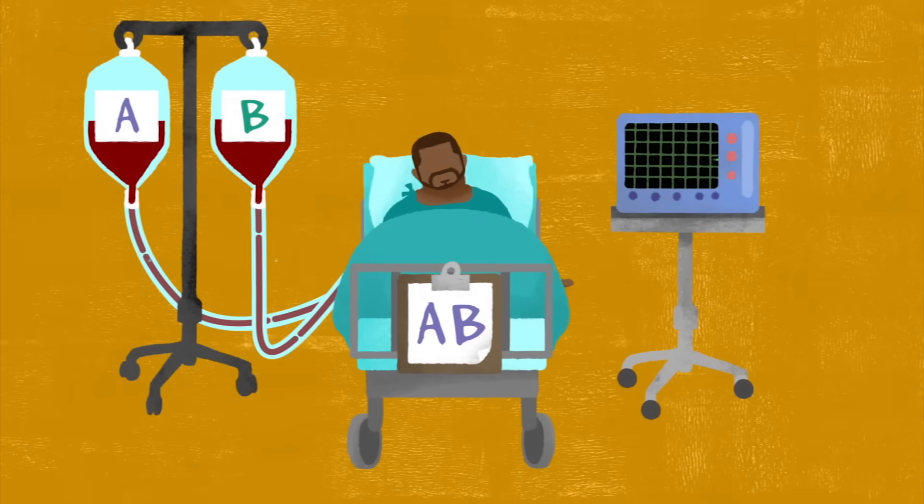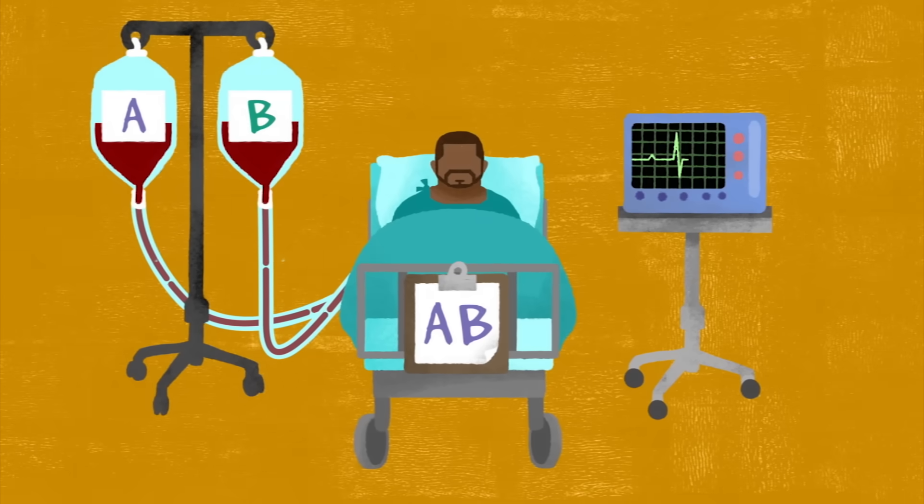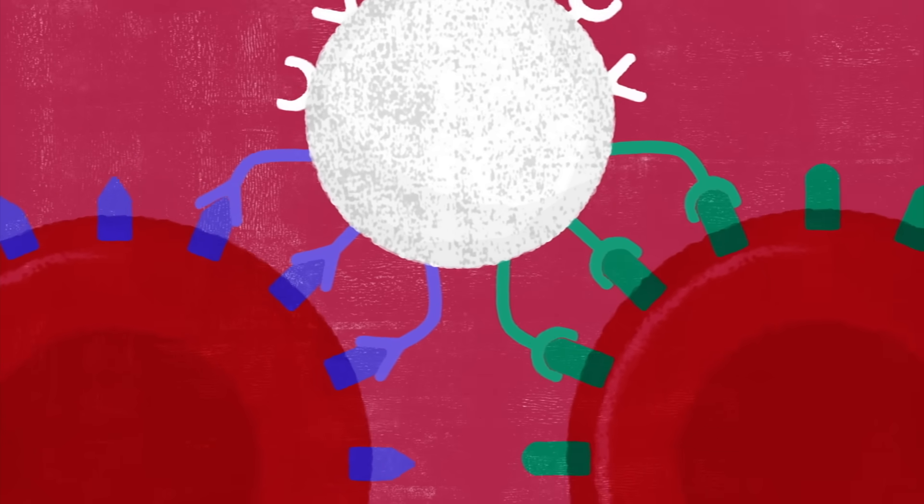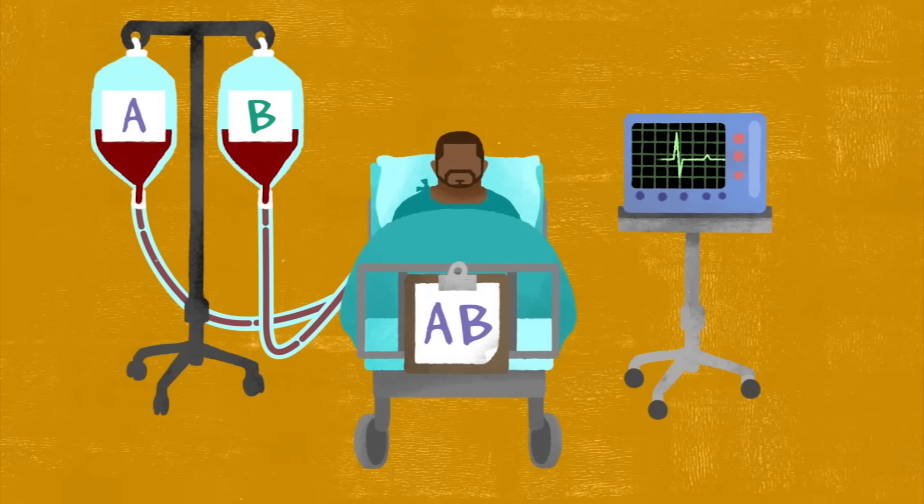But because people with type AB blood produce both A and B antigens, they don't make antibodies against them, so they will recognize either as safe, making them universal recipients.